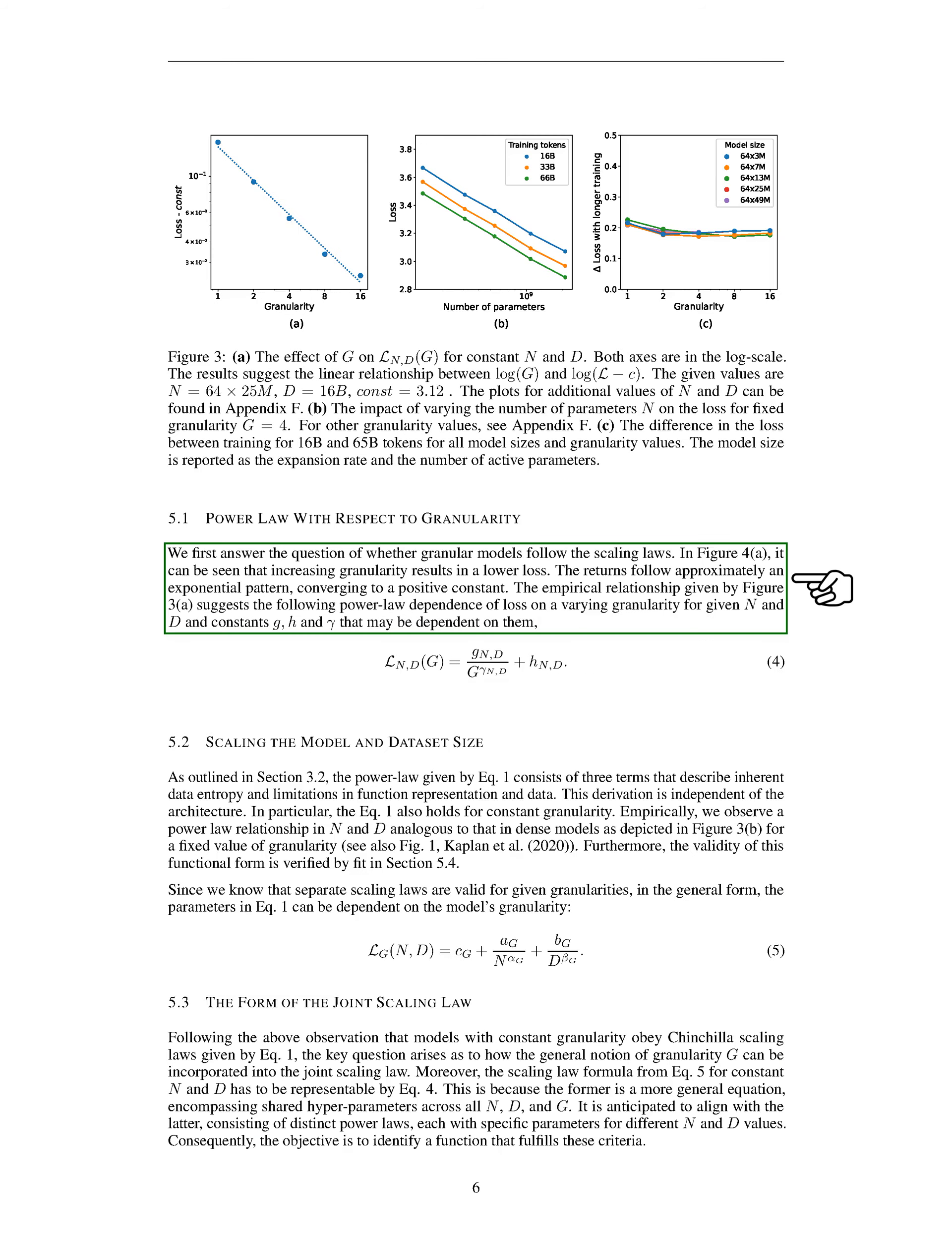In this section, we delve into whether models that use different levels of detail, or granularity, adhere to certain scaling laws. We noticed from our observations that as we increase the level of detail in our models, the error rate tends to decrease. This decrease in error follows a pattern that looks a lot like an exponential decrease, eventually stabilizing at a certain low level. When we talk about scaling the size of our models and the datasets they learn from, we refer to a specific mathematical relationship that involves three key factors: the inherent complexity of the data, the limitations in how our models can represent functions, and the data itself. This relationship doesn't change regardless of the model design we use.